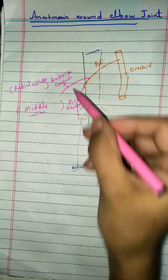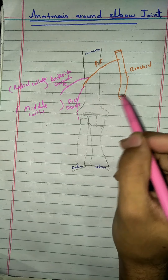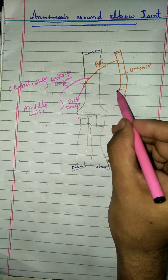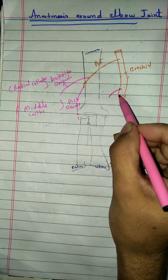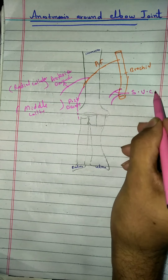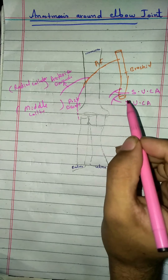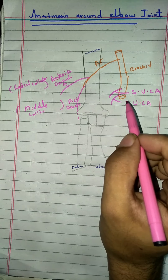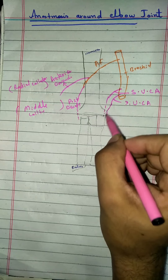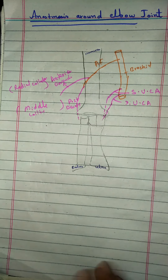The posterior descending branch passes posteriorly from the lateral epicondyle, and the anterior descending branch passes in front of the lateral epicondyle. Now the brachial artery itself also gives two main branches: the superior ulnar collateral artery and the inferior ulnar collateral artery. The superior ulnar collateral artery passes behind the medial epicondyle, and the inferior passes in front of the medial epicondyle.